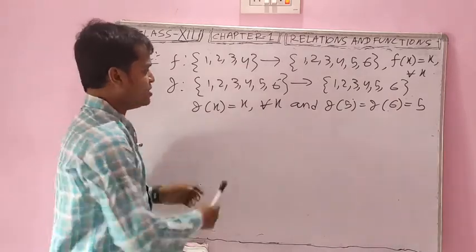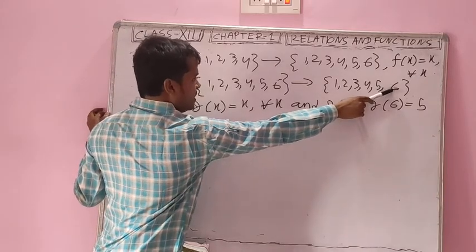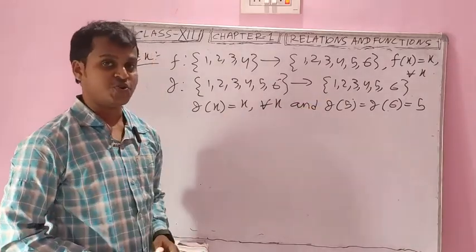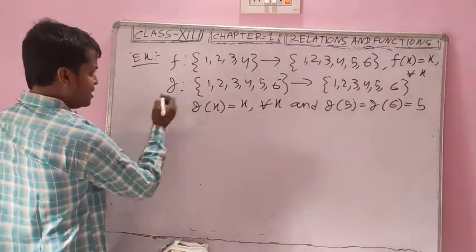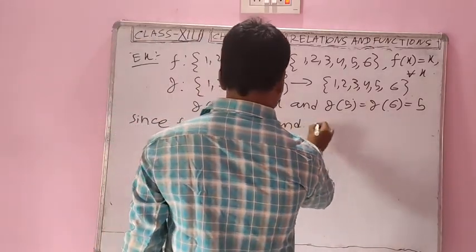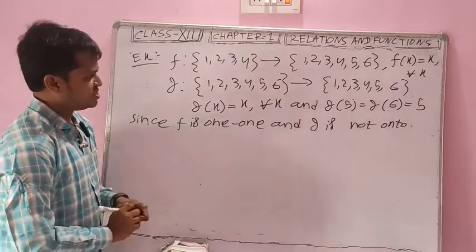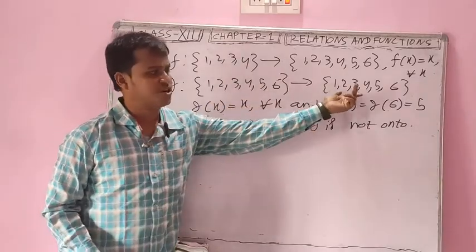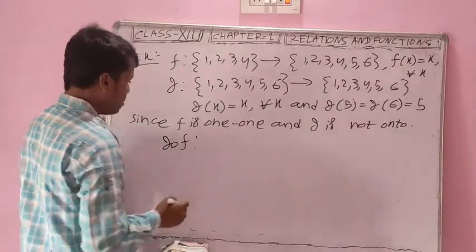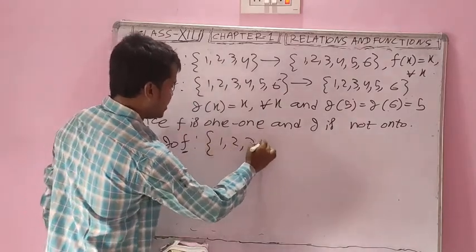G is not one-one because 5 and 6 are two different elements in the domain having the same image 5. G is also not onto because the range is {1, 2, 3, 4, 5}, but element 6 has no preimage in the codomain — meaning range is not equal to codomain. Now find G∘F. The domain of G∘F equals the domain of F, which is {1, 2, 3, 4}, and the codomain equals the codomain of G.